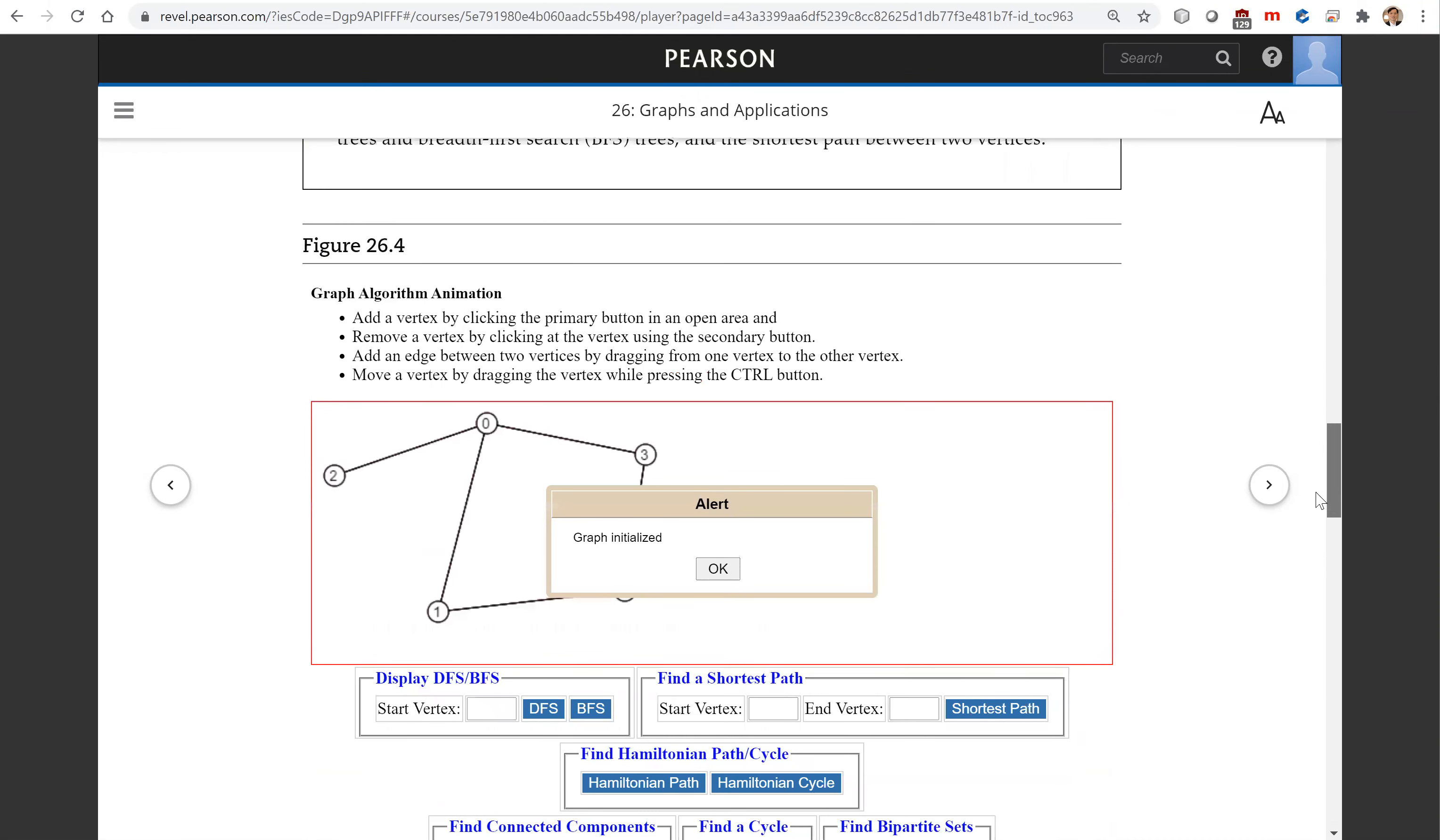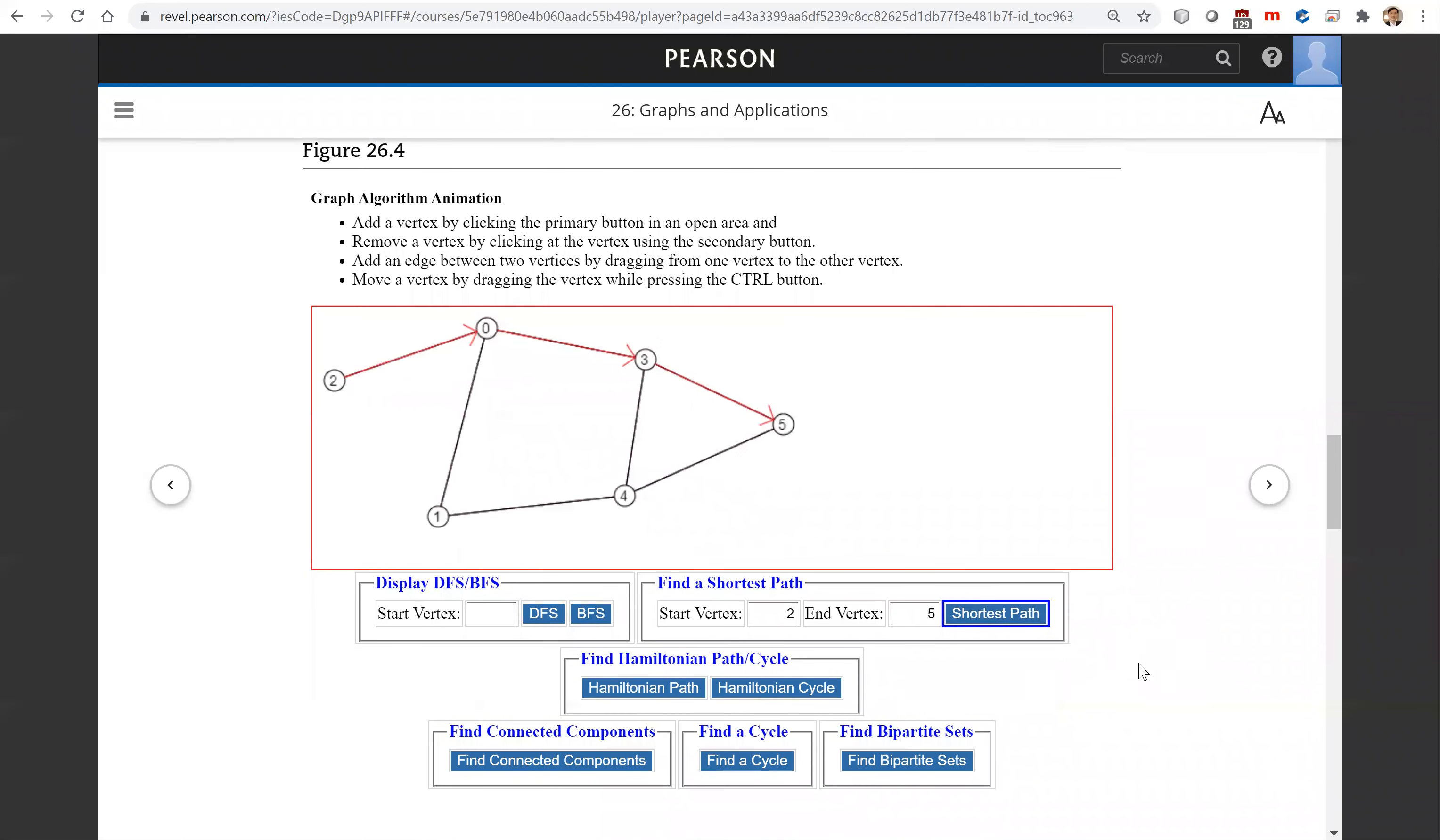Let's look at this animation. We can add more vertices and add edges. Here we're going to start from vertex 2 and find the shortest path from 2 to 5. This is the shortest path. We will look at other applications, depth-first search and breadth-first search in this chapter, and also the connected components and find cycle as exercises in this chapter.